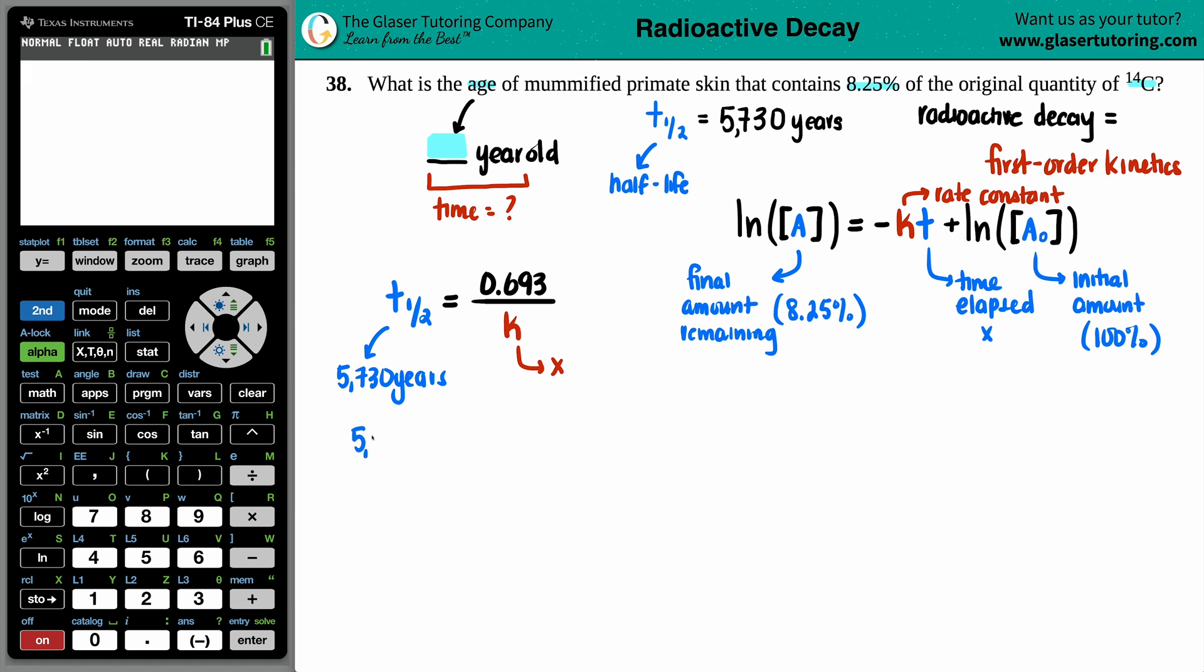And let's solve for K. So 5,730 equals the 0.693 divided by the K. You can cross-multiply, do a little swippity-swoppity-roo. So this would be 5,730 times K equals 0.693. Let's solve for K by dividing by the time, 5,730. So this goes bye-bye. And 0.693 divided by 5730. That looks good to me.